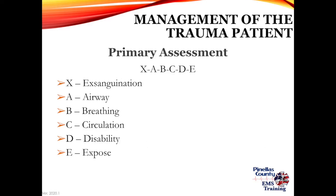Back to the primary assessment — it's X, A, B, C, D, E. X is for exsanguination: fix any life-threatening hemorrhages first. Then continue the rest of your primary assessment — airway, breathing, circulation, disability, and exposure.